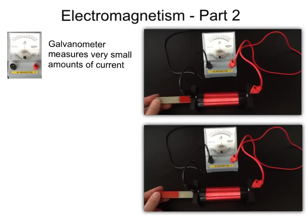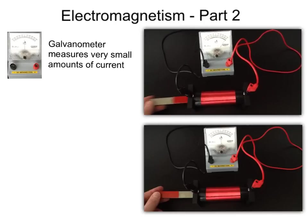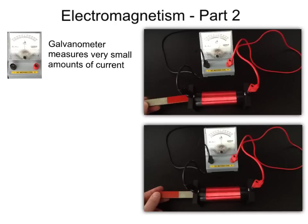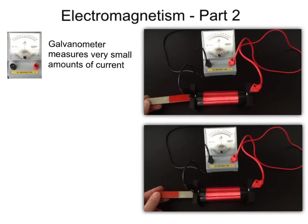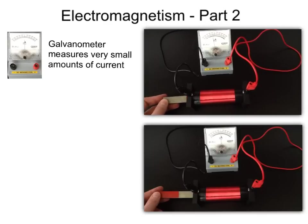But if we look back here, as we go in at a high speed, you can see there's a lot of current flowing. A great deflection on the galvanometer. If we go in at a much lower speed, we see that the galvanometer deflects, but not by much.